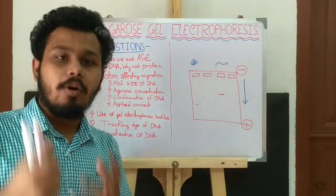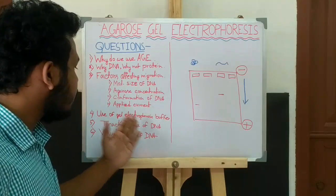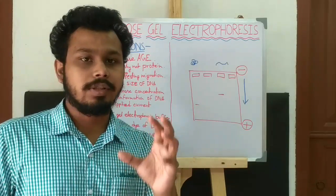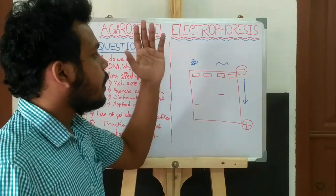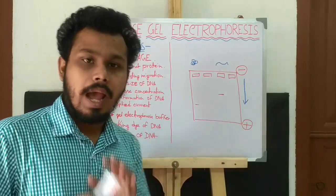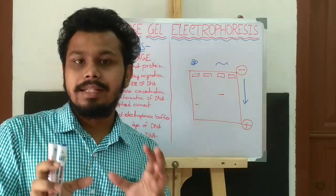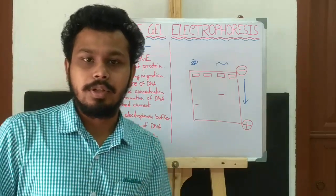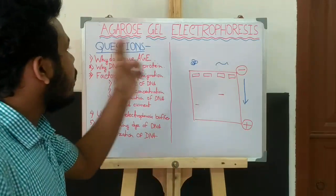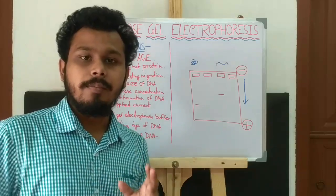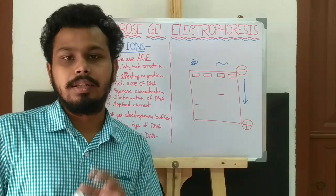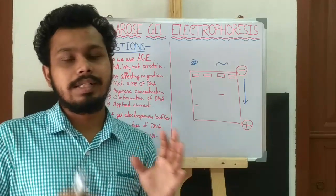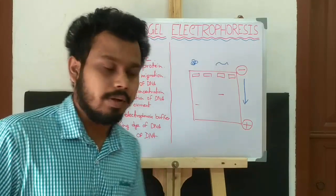Now, what is the use of the gel electrophoresis buffer? Buffer provides ions that carry the current from the cathode to the anode, and it also maintains the pH at a relatively constant value. In agarose gel electrophoresis, we use two types of buffer: Tris-Borate-EDTA (TBE) buffer or Tris-Acetate-EDTA (TAE) buffer.